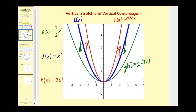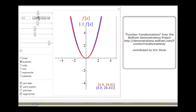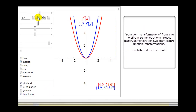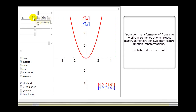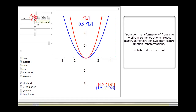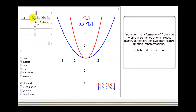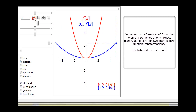Let's look at an animation. When a is greater than one, we see a vertical stretch by a factor of a. When a is between zero and one — starting at a equals one, then zero point nine, zero point eight, and so on — we see a vertical compression, here by a factor of three tenths.